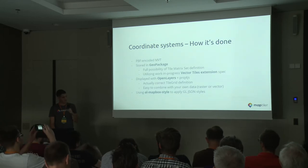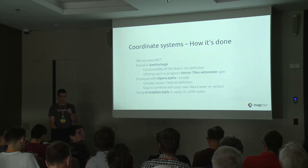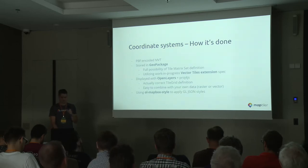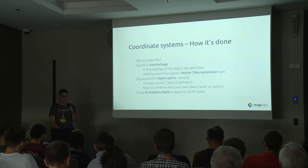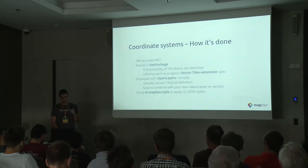We use OpenLayers, which makes it possible to correctly define the grid and display the vector tiles in the correct positions with the correct coordinates. It's then very easy to add WMS or WMTS as an additional layer — everything stays in that specific projection with no reprojection to Mercator and back. It's still possible to use Mapbox GL JS styles because there's an open source Mapbox style library that can take the GL JSON style and apply the styling to the OpenLayers layer, so it can look visually almost the same as Mapbox GL JS.